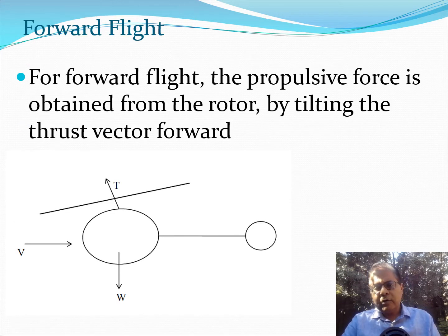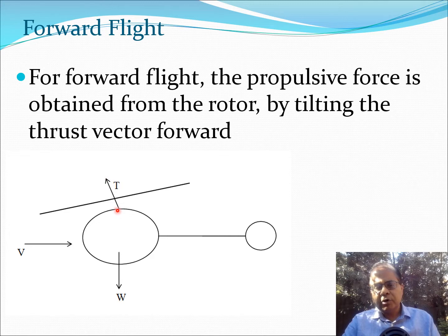When the helicopter wants to get into forward flight, the pilot has to change some control settings such that the thrust vector is shifted forward, or has a component in the forward direction. This propulsive force is obtained by tilting the thrust vector forward, and then the helicopter will start moving forward. The same thing could be done for backward flight or sideways flight.